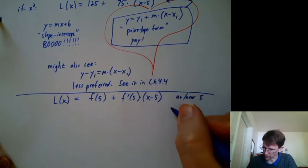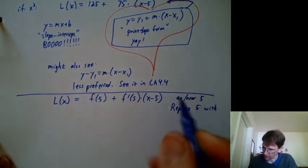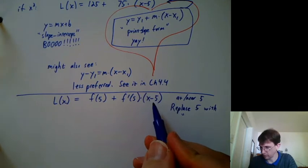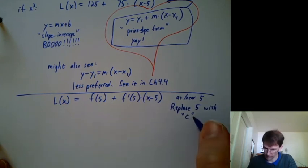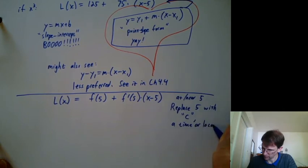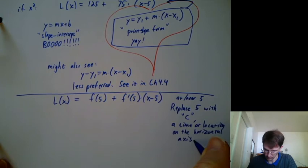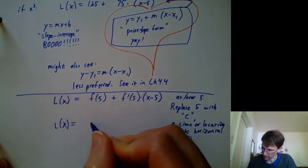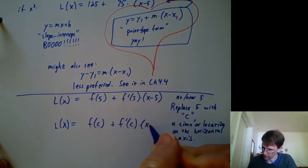If you're tired of 5, let's replace it with some other number. And instead of a number, we're going to replace it with a letter. We can't use x because x is some value other than 5, or sometimes in this formula, x can be something other than 5. So we're going to replace it with some other letter. We're going to call it c, and that's a time or location on the horizontal axis, just like 5 was for us.